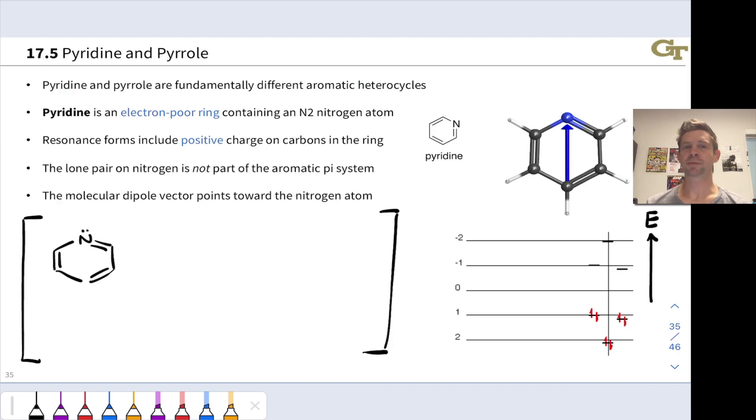In this video, we're going to take a look at pyridine and pyrrole, two very important and prototypical and highly instructive examples of aromatic heterocycles that differ profoundly in their electron density at their carbon atoms. Let's start with pyridine.